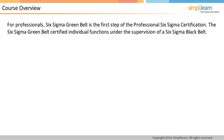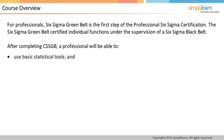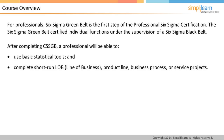For professionals, Six Sigma Greenbelt is the first step of the professional Six Sigma certification. The Six Sigma Greenbelt Certified Individual functions under the supervision of a Six Sigma Blackbelt. After completing CSSGB, a professional will be able to use basic statistical tools and complete short-run line of business, product line, business process, or service projects.